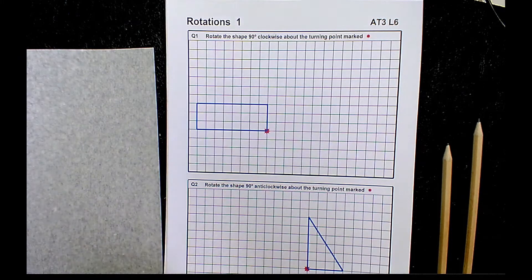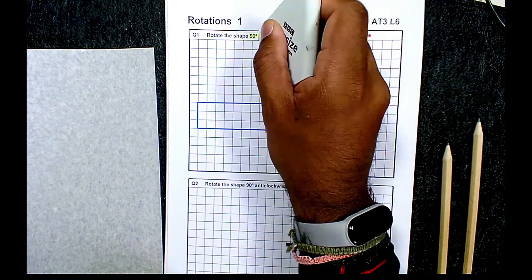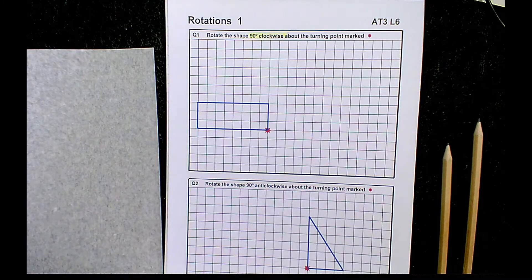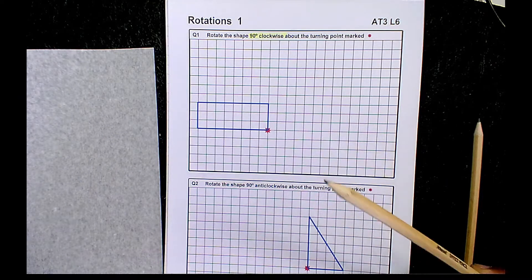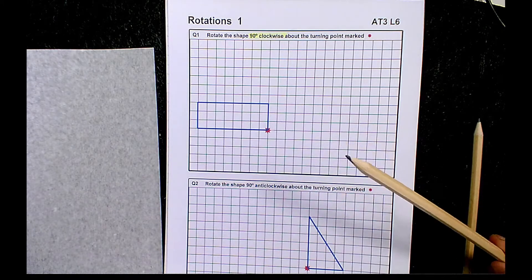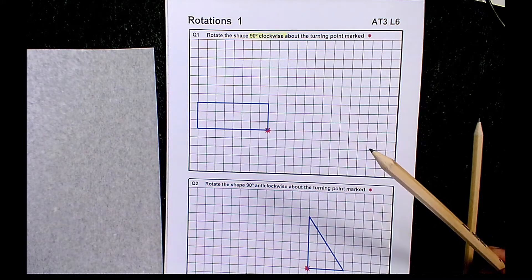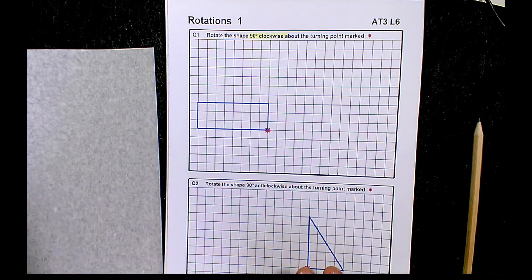Question one asks us to rotate the blue rectangle 90 degrees clockwise, with the centre of rotation marked as a red star. To use tracing paper effectively you definitely need a sharp pencil — you can't use tracing paper without a pencil, and a blunt pencil will mess it all up. Make sure you have some rough paper underneath when doing this.